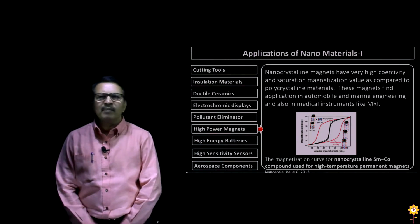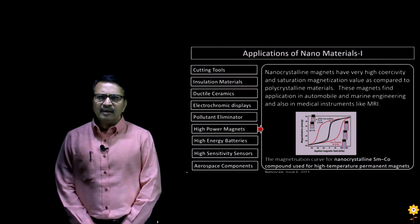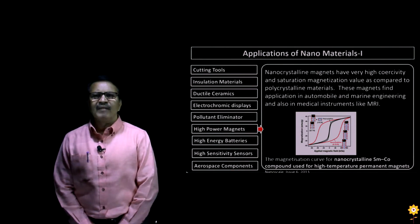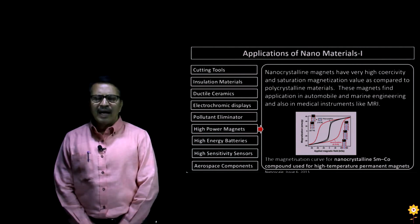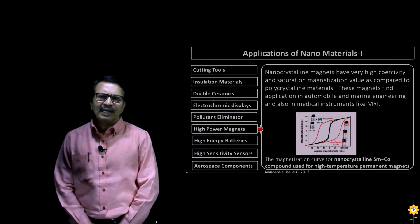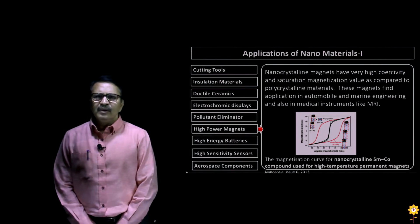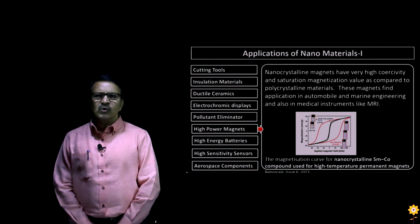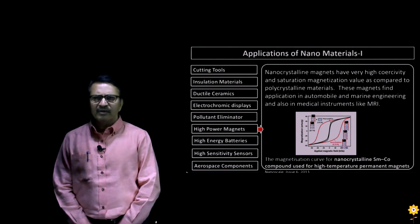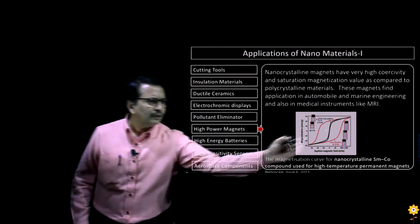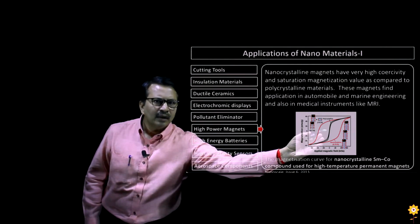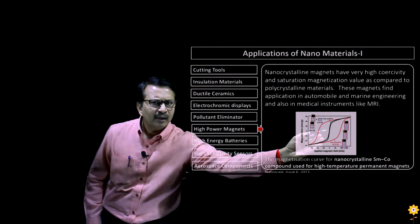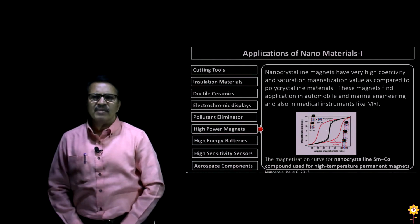We now move to another application of nanomaterials — higher power magnets. Nanocrystalline materials, if used in the making of magnets, will have higher coercivity and high saturation magnetization as compared to polycrystalline materials. Such magnets find applications in automobiles, in marine engineering, and also in magnetic resonance imaging (MRI). Here is the magnetization curve for the nanocrystalline samarium cobalt alloy, which is used in high temperature magnets.